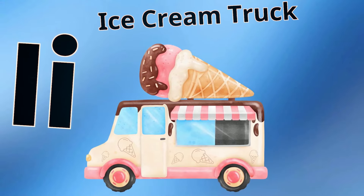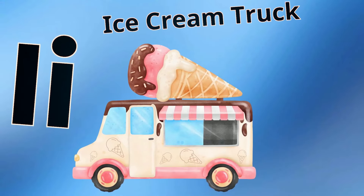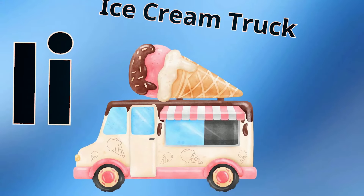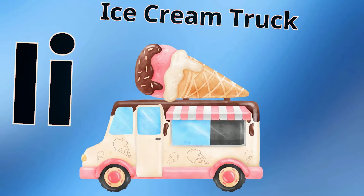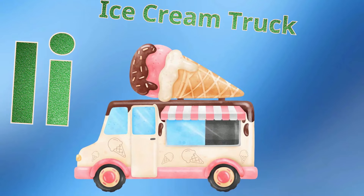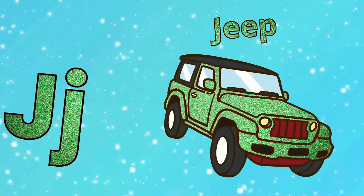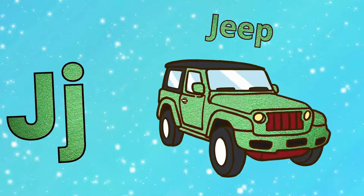I is for ice cream truck, I-I ice cream truck, playing happy tunes, here it comes, ice cream truck. J is for jeep, J-J jeep, bouncing on the trail, rugged ride, jeep.